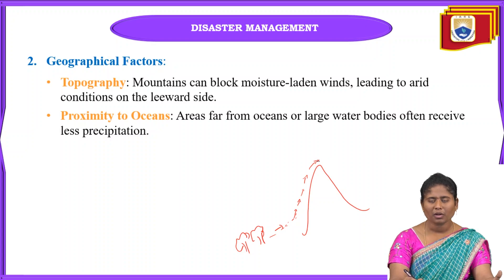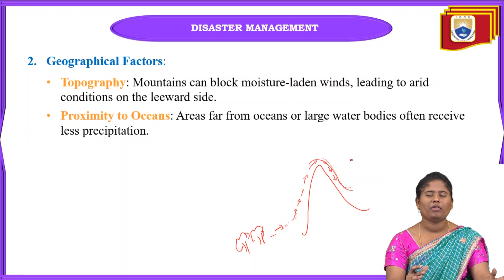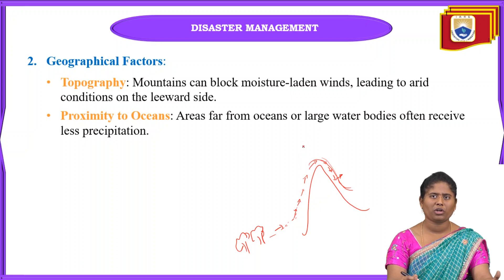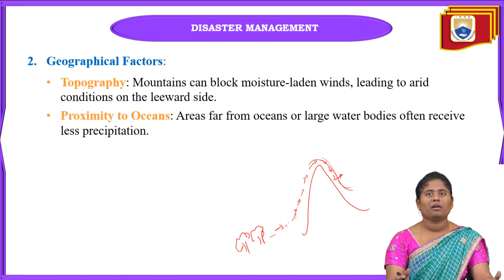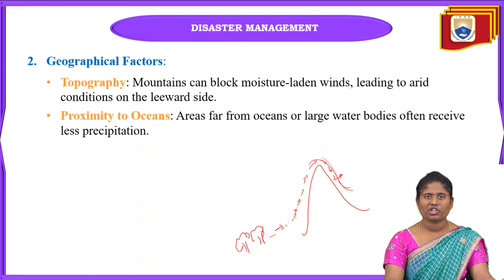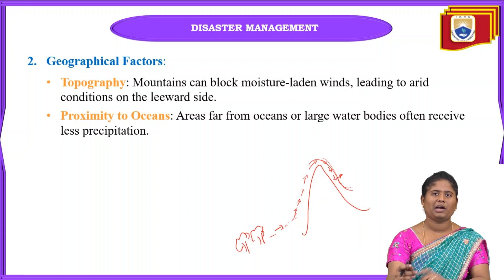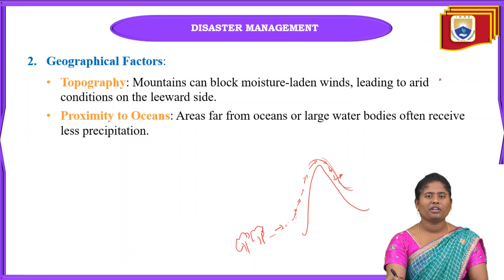On the leeward side of the mountain, cool and wet conditions are not available — only dry air is found. When winds fall down the leeward side, the wet conditions that would cause precipitation are lost and change to dry conditions. So mountains block moisture winds, giving rise to dry conditions on the leeward side.